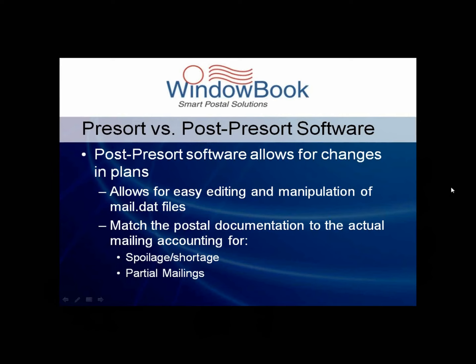Now, during the physical preparation of the mail, pieces get damaged or spoiled and then get pulled from the mailing. Sometimes they get reprinted and manually inserted back into their proper handling units, but most times they simply get pulled and either mailed separately or just not mailed at all. Once again, post-pre-sort software can be used to edit the Mail.Dat files so these pieces are not reported as part of the mailing and postage is not wasted on them.